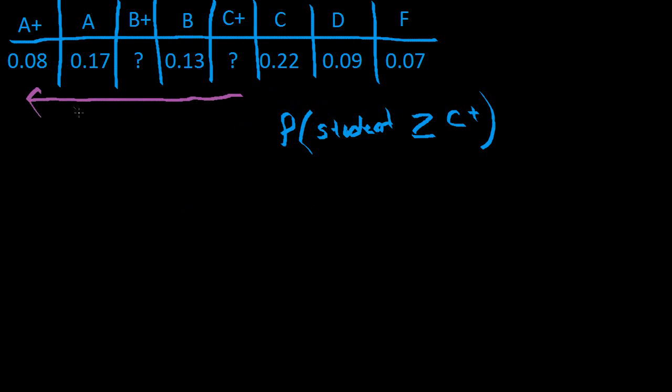So what we need to do, because this is a probability distribution, meaning all of these values here, this value, this value, they're all probabilities of a student getting that particular grade. So to get the probability of a student getting a C or a B or a B+, or an A or so forth...